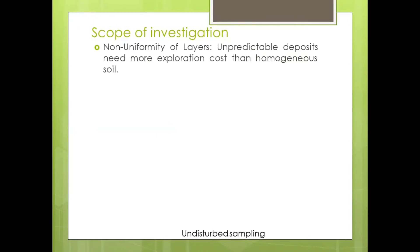Now, there is some scope of investigation. Non-uniformity of layers — whatever layer is there on the surface need not continue below certain inches, meters, or feet. On any surface, we don't know the thickness of a layer, whether there is another type of layer below the first, or how many different layers exist. It is unpredictable, and unpredictable deposits will need more exploration cost than homogeneous soils.